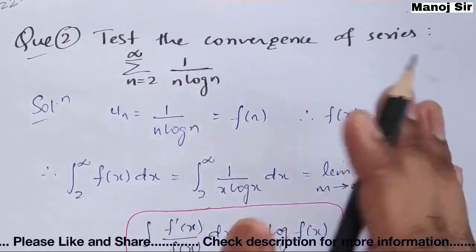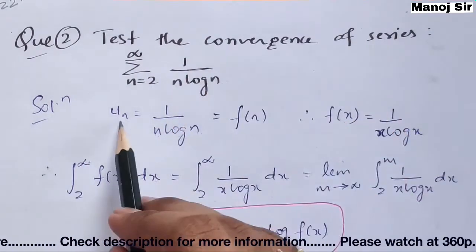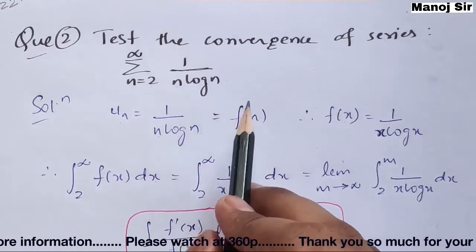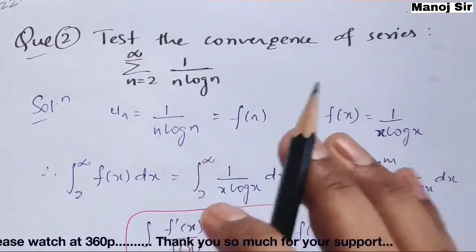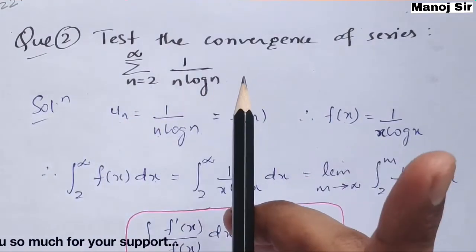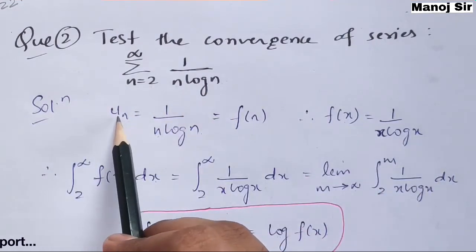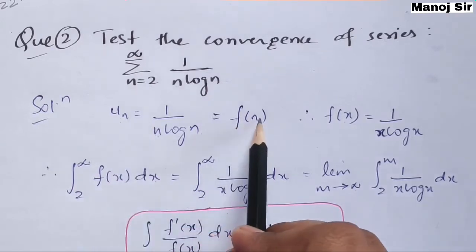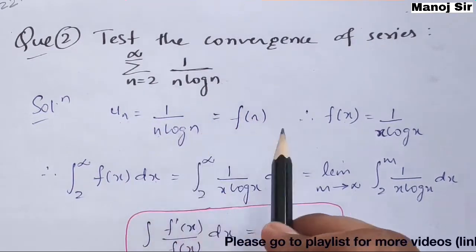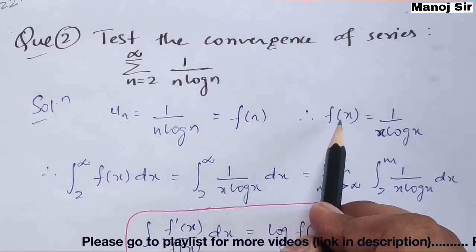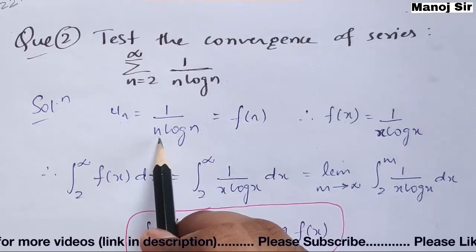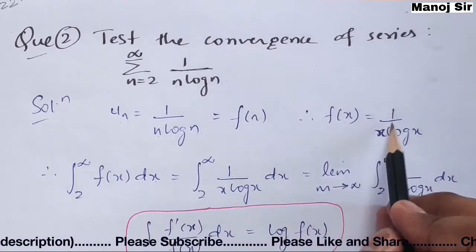The nth term of this series is u_n equals 1 upon n·log n. From the previous video, we have already seen that u_n equals f(n). So here f(n) equals 1 upon n·log n. From this we can find the value of f(x) — simply put x in place of n.